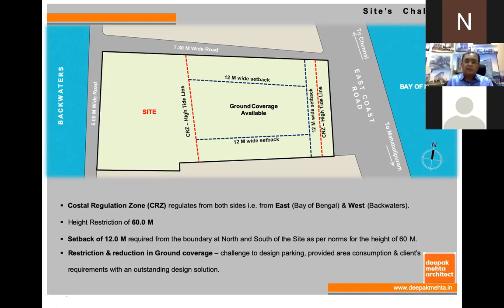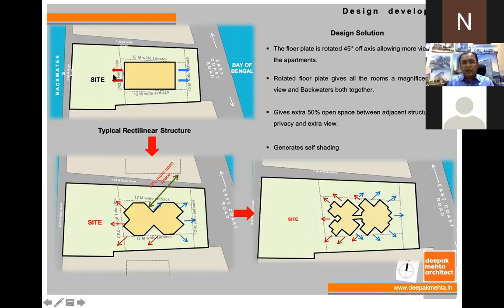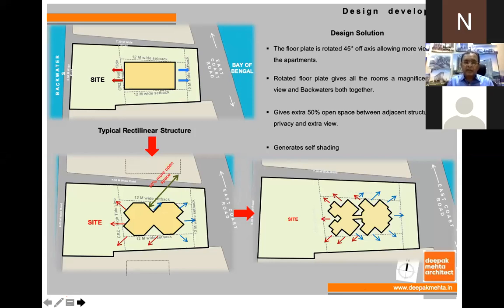We had to consume the client's FSI as well as take advantage of the fantastic location. If I had done a regular rectangular building, I could have given only four or five rooms a sea view; the rest would have been at the back. So we tried with an angular approach and finally developed into a design where almost all rooms were having sea view as well as the backwater lagoon view — very difficult to obtain because of the narrow width of the plot and the CRZ implications.